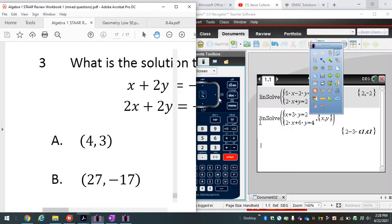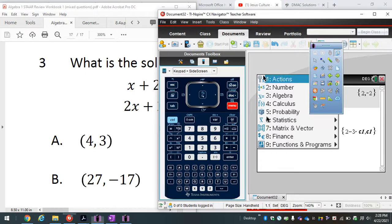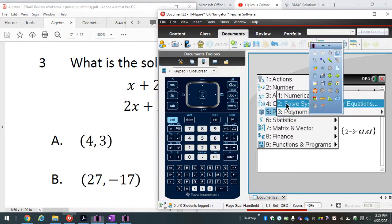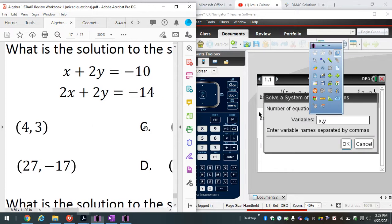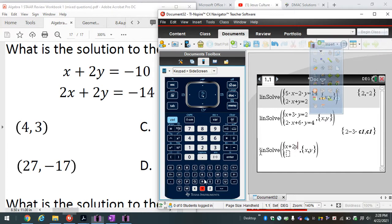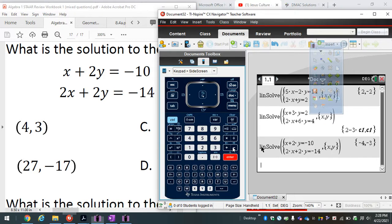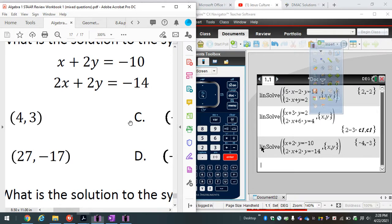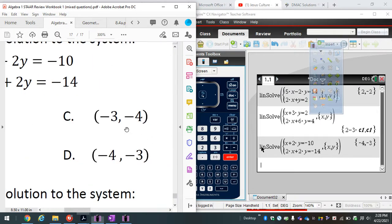A third one, this is the craziest thing I've ever seen. Oh my goodness, this is ridiculous. Same thing, let's go back here, menu 3-2. I'm gonna type in 2x plus 2y equals negative 10, 2x plus 2y equals negative 14. Negative 3, negative 4, it means D.